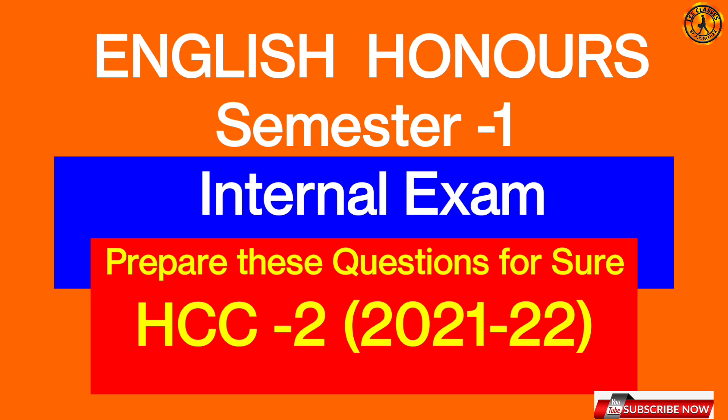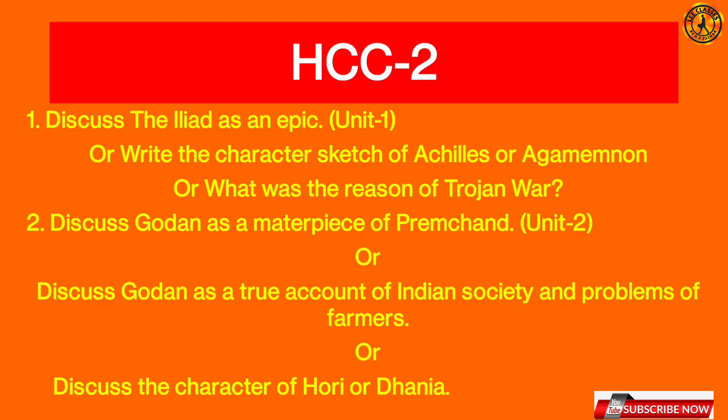Now you will see how important questions are going to be made in Core Course Paper 2. First unit: discuss the Aeneid as an epic, or write the character sketch of Achilles or Agamemnon, or what was the reason of the Trojan War. These three questions are prepared for you — you have 10 marks. For the internal, it will be 5 marks, and you can also see short questions.